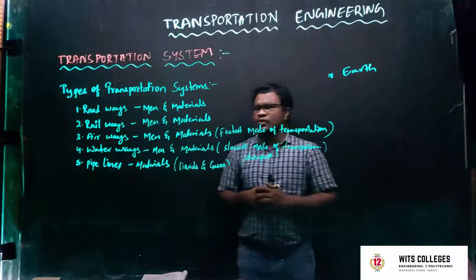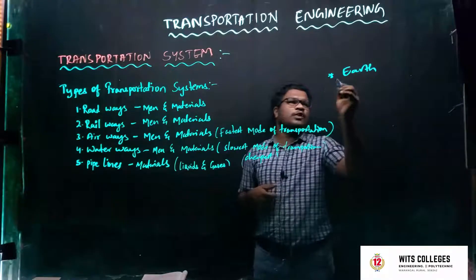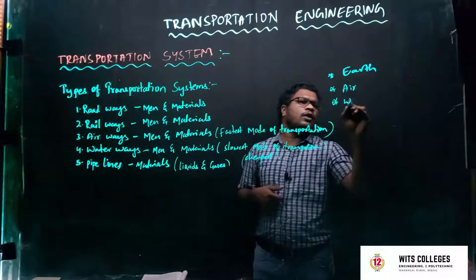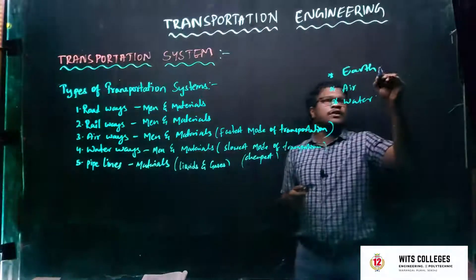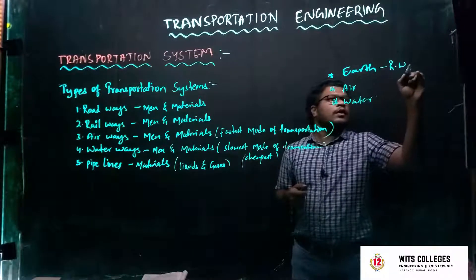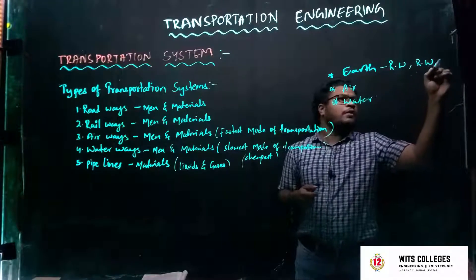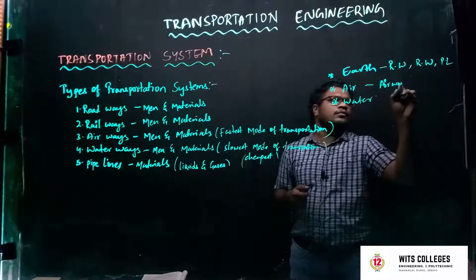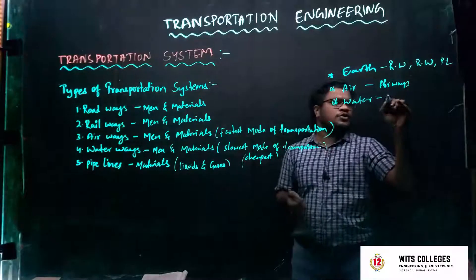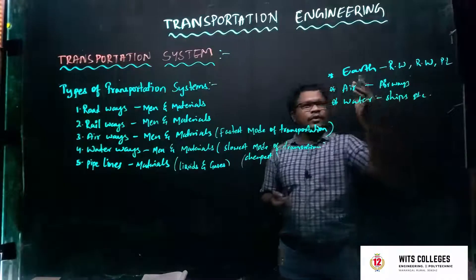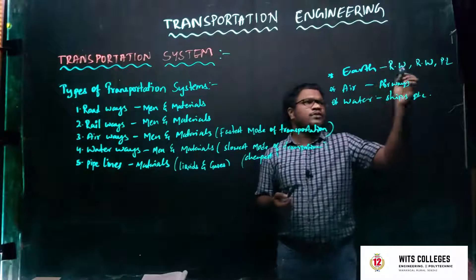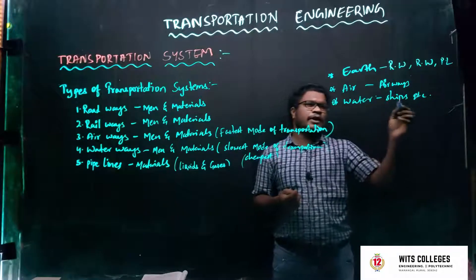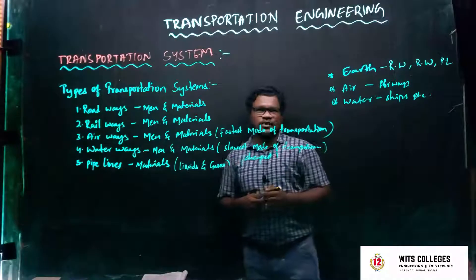What are the different mediums used in the transportation system? The first one is earth, next is air, and then water. On the earth surface we can construct roadways, railways, and pipelines. In air, only airways operate using aircraft. In water, waterways operate using ships and vessels. So these three mediums — earth, air, and water — support the five different modes of transportation systems.